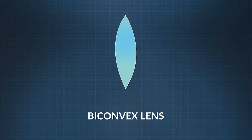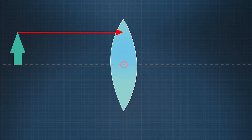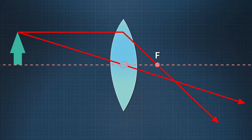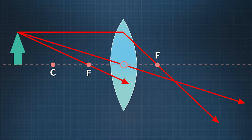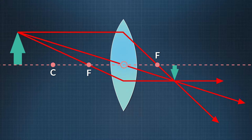Let's analyze a real image formed by an object beyond the center of curvature. You can predict the position of the image by creating a ray diagram of just three representative rays, using a biconvex lens. First, draw a light ray parallel to the principal axis — when it strikes the lens, it refracts through the focal point on the opposite side. Second, a ray through the optical center is not refracted and continues in a straight line. Third, a ray from the object through the focal point on the same side strikes the lens and refracts horizontally. Where these three rays cross is where the image is in focus — and since it's a real image, it will be inverted below the principal axis.